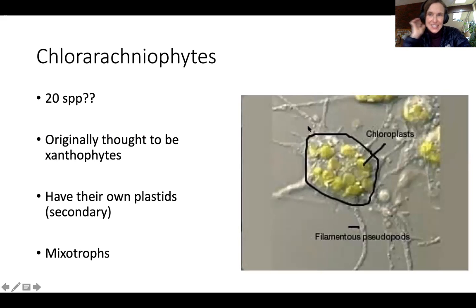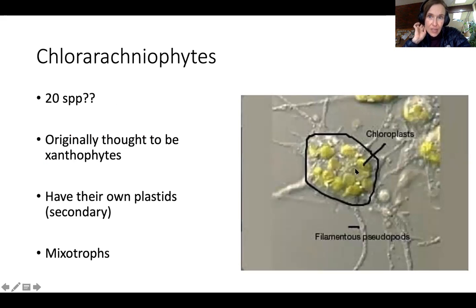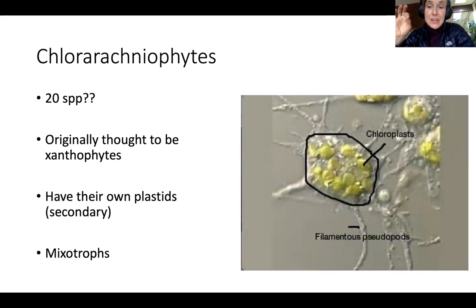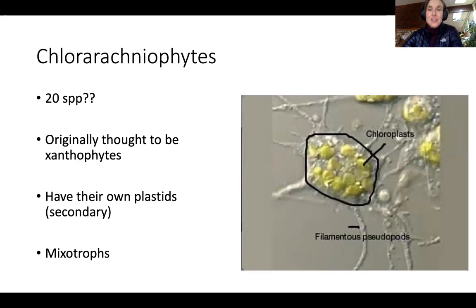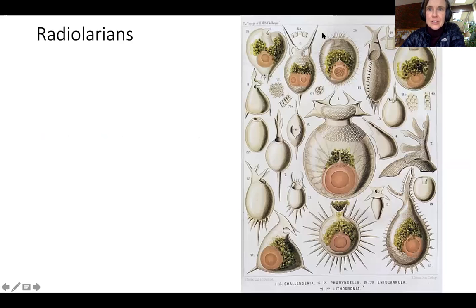Chloroarachnophytes — I like these. 'Chloro' is green and 'arachnophytes' is spider plants — green spider plants, how cool is that? There's not very many of them. Originally they were thought to be xanthophytes because they have chloroplasts, so these are photosynthetic. But these are secondary chloroplasts because they have nucleomorphs — you can see the nucleus residue from the organism that these guys engulfed. Way back in the day, the chloroplasts were free-living photosynthetic protists, but now they belong to Chloroarachnophytes. They're called spiders because they have all these pseudopods that look all spidery. They're mixotrophs — they can be heterotrophs or phototrophs. In the reading this week there's content about these vampire Chloroarachnophytes — really cool stuff.